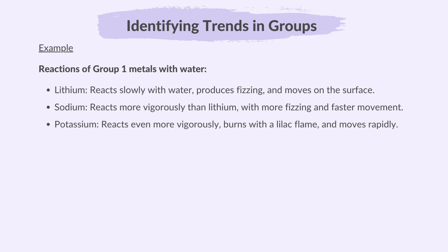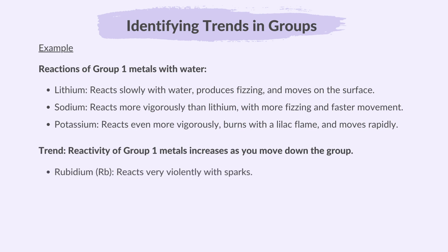Based on the above observations, we may identify a trend occurring as you go down the group. That reactivity of group 1 metals increases as you move down the group. Now, given this information about the first three elements of the group, we may predict that the lower group 1 metals will react even more strongly. And this may be confirmed by observing their reactions with water. Rubidium reacts very violently with sparks. The reaction is more vigorous compared to potassium.